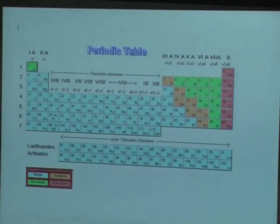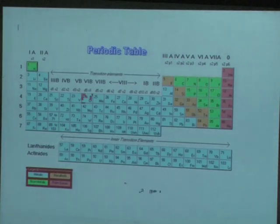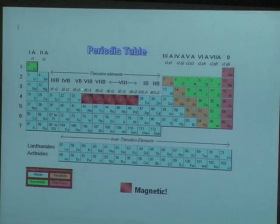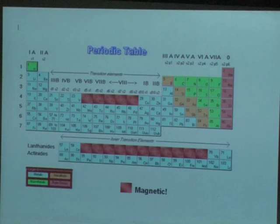This is a periodic table that you all know of. These are the rare earths, these are the actinides. This is the 3d transition metal, 4d and 5d. And if I ask which are the magnetic elements here, it turns out that there are very few magnetic elements. That's chromium, manganese, iron, cobalt, and nickel, and the rare earths here. That's all that the magnetic elements are. There is electrons, there is spin, and yet, very few elements that are magnetic.